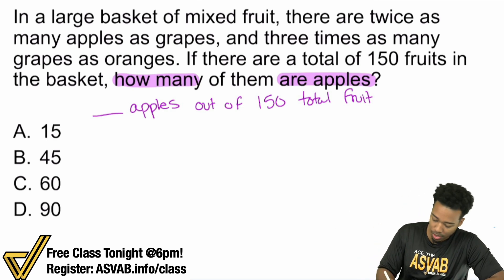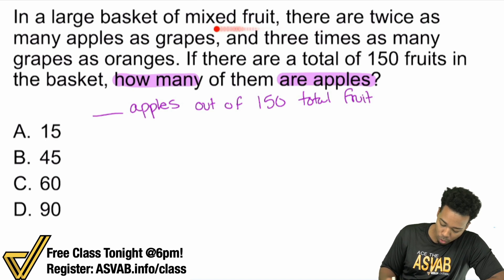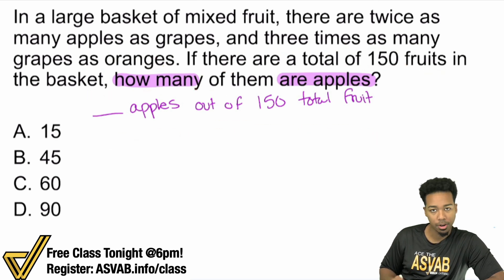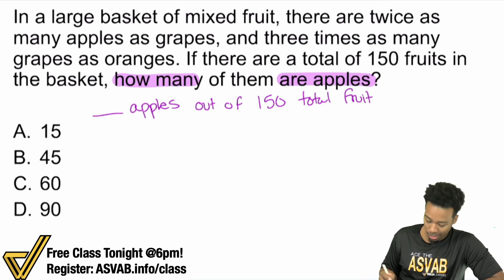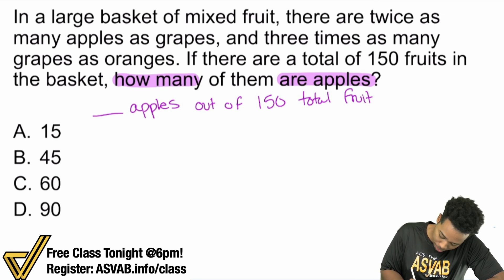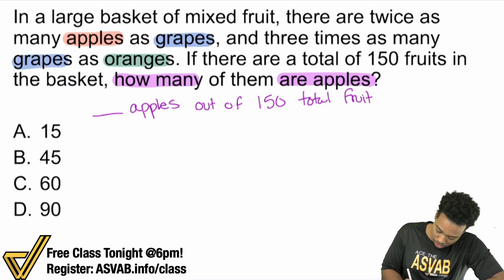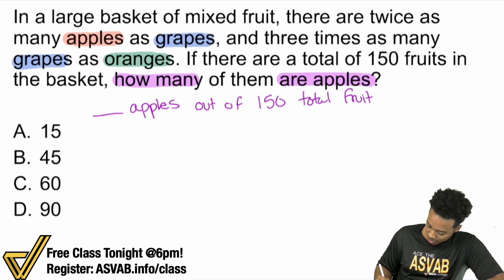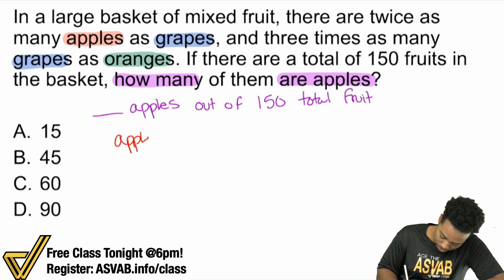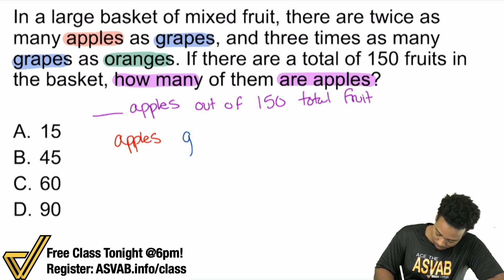Watch how we're going to get there. In a large basket of mixed fruit, there are twice as many apples as grapes, and three times as many grapes as oranges. If there are a total of 150 fruits in the basket — that's where we have our info. We want blank apples out of 150 total fruit. I've noticed we have three types of fruit here, so I'll use three different colors: blue, red, and green. We have apples, grapes, and oranges.